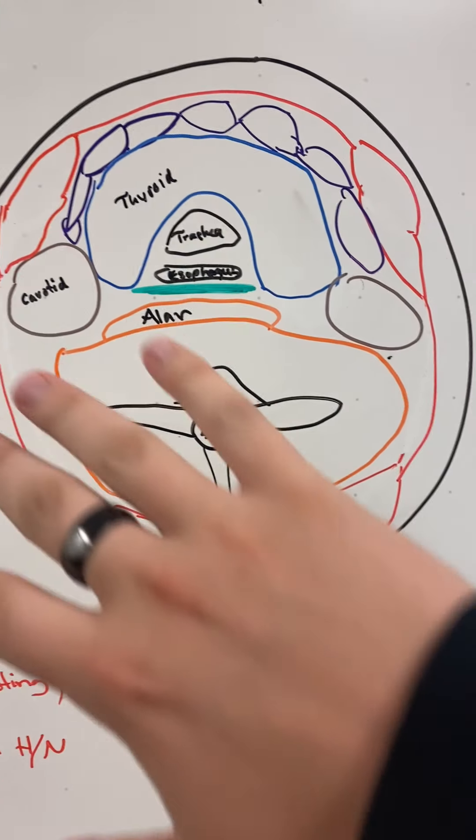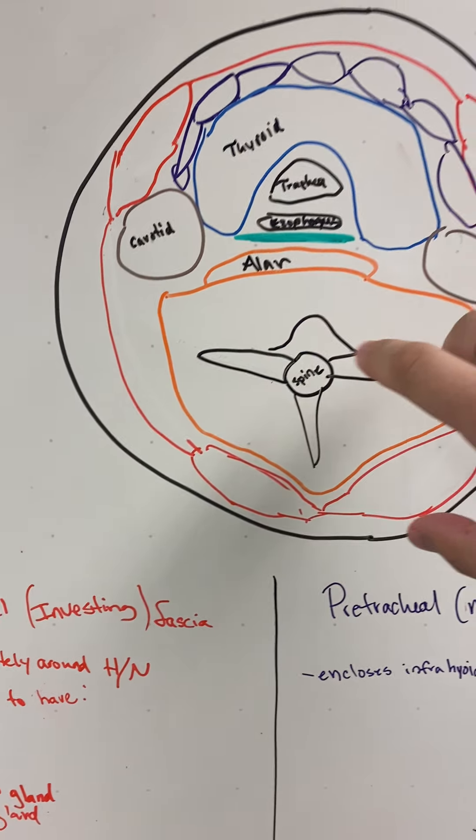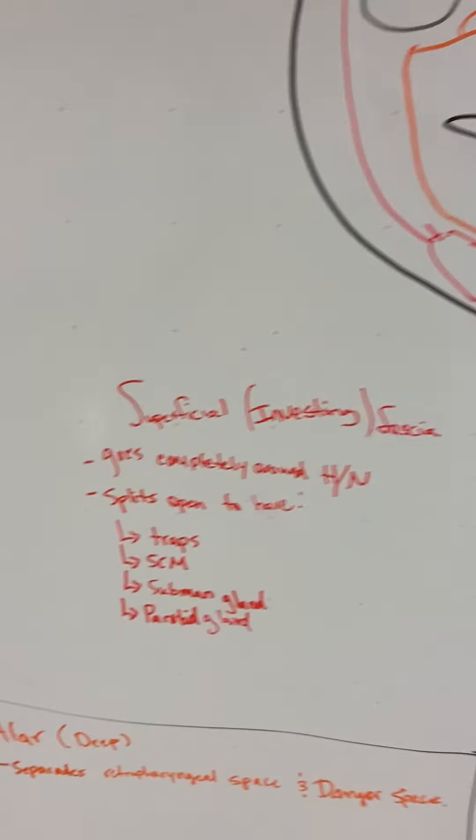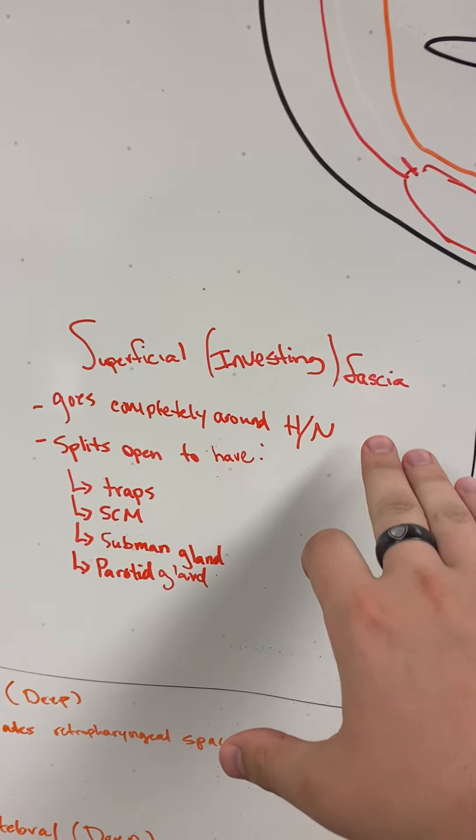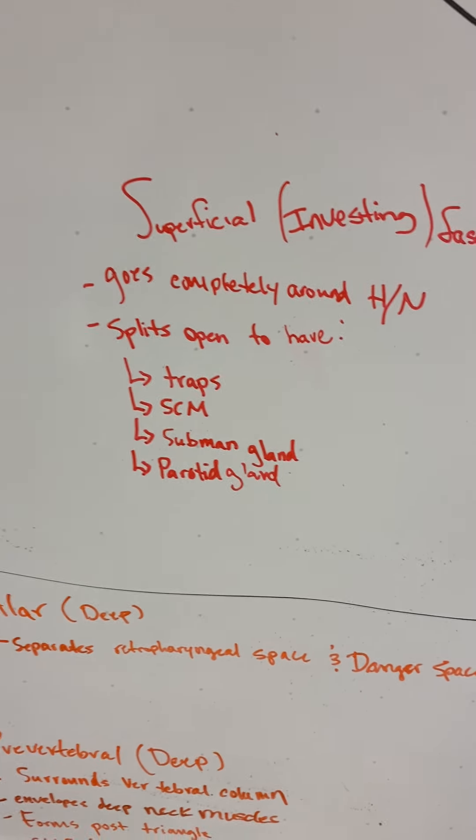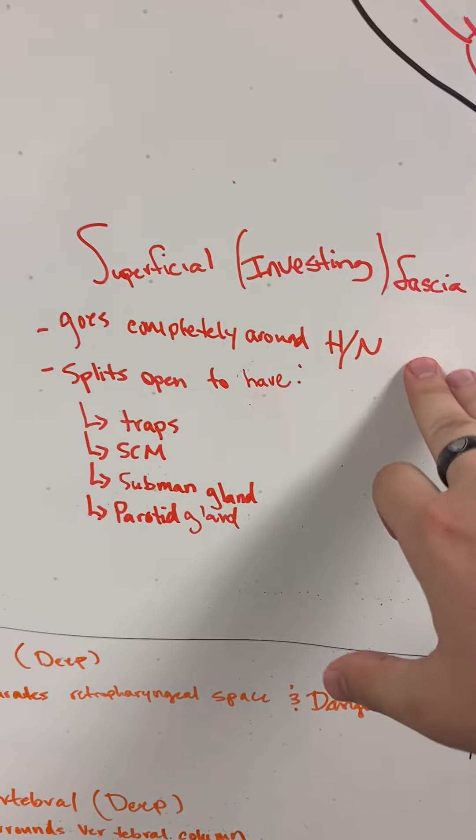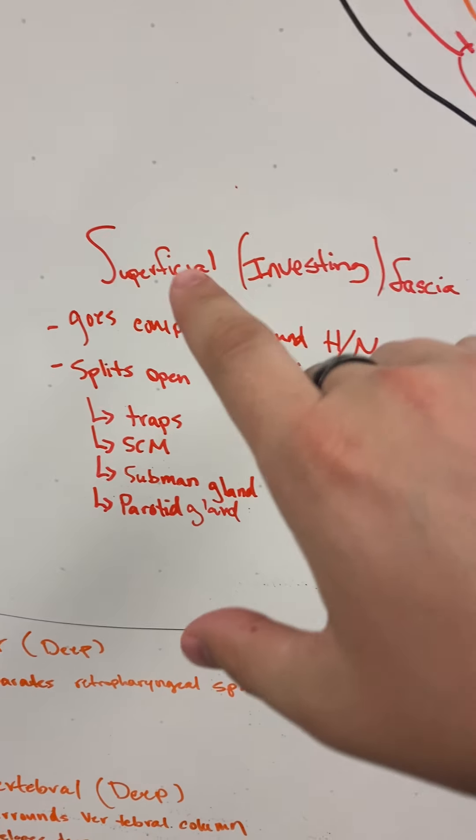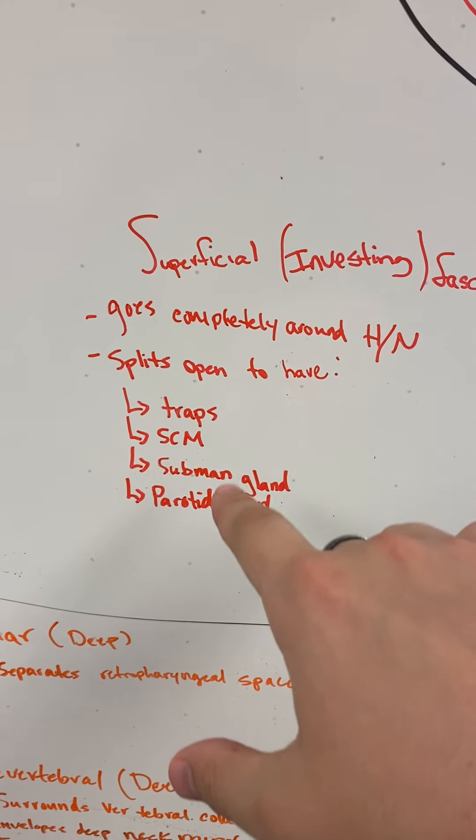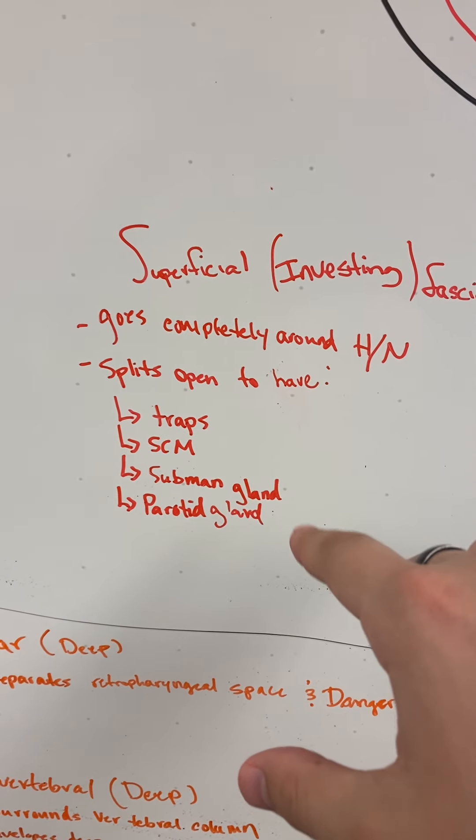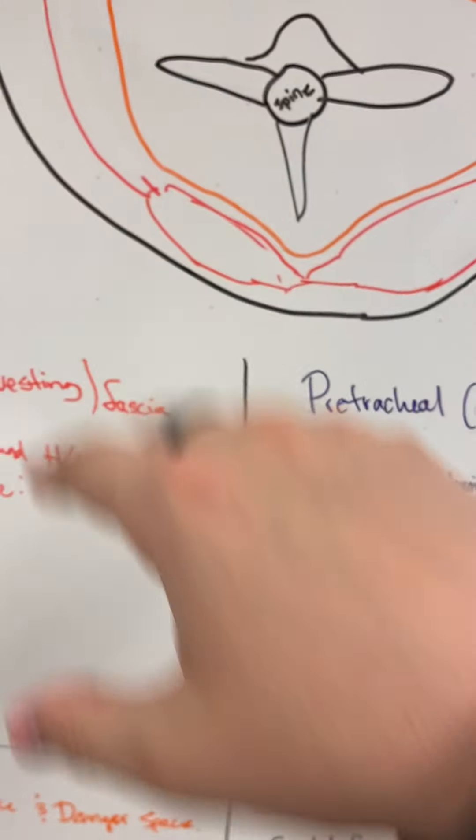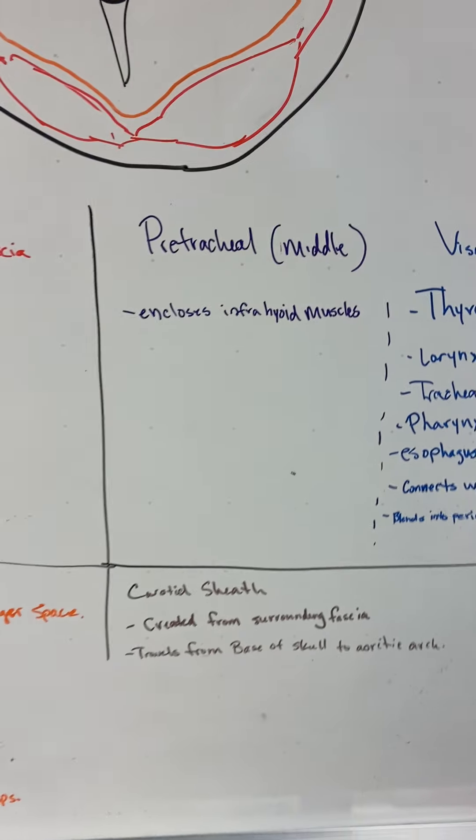So here's our picture, we'll go through each one. I just labeled stuff on here. Superficial or investing fascia—it's kind of annoying because it has the same name as the other one, but this is layer one. It goes completely around the head and neck, from anterior to posterior, just wraps around. It splits open to have these two muscles go through it, and it has a submandibular gland and the parotid gland located in that area as well.